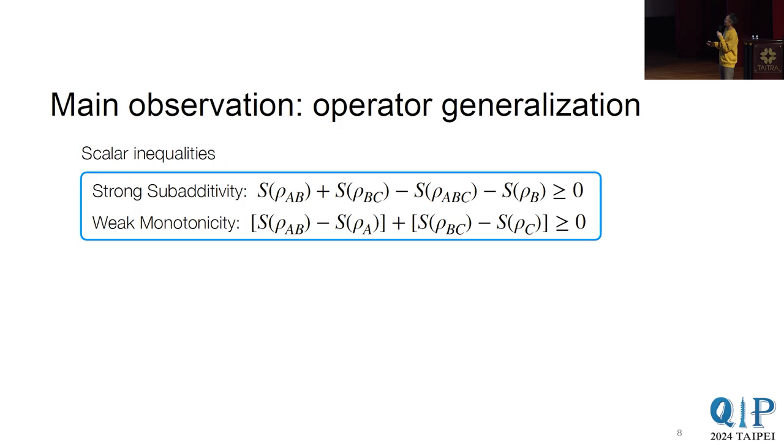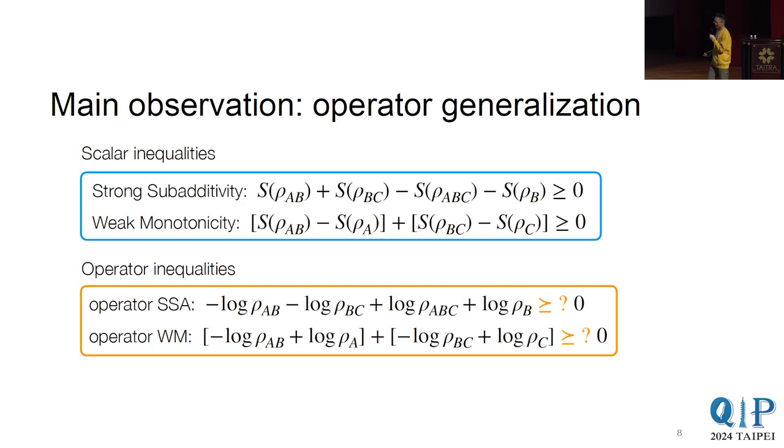So that was some basics, and now we go into the main observation. So here are the two inequalities, strong subadditivity and weak moneticity, and we know that they're equivalent. We call these the scalar inequalities because they're inequalities between numbers. And the thing we ask is, can we generalize them to operator inequalities? So these are inequalities between matrices.